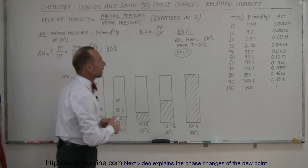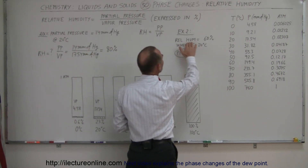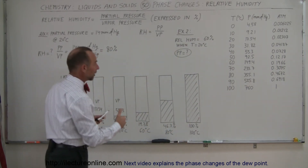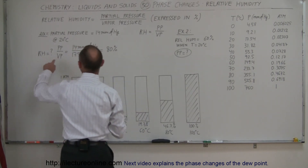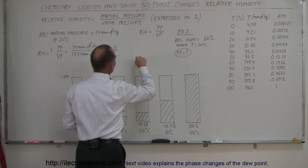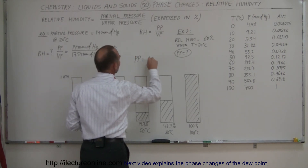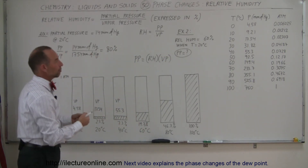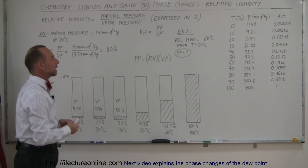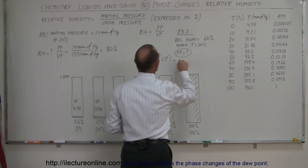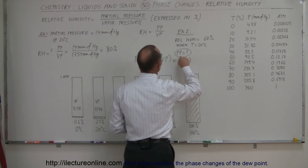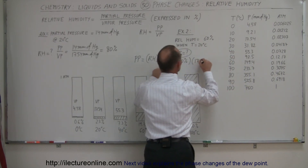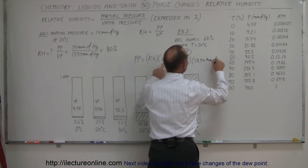For the second example, let's say the relative humidity is reported as 60% at 20 degrees centigrade. What is the actual partial pressure of the water vapor in the air? We can take that equation and solve it for partial pressure: partial pressure equals relative humidity multiplied by the vapor pressure. The vapor pressure at 20 degrees centigrade is 17.54 millimeters of mercury, so this would be equal to 60% times 17.54 millimeters of mercury.